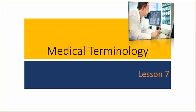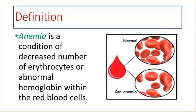Medical Terminology, Lesson 7. Definition: Anemia is a condition of decreased number of erythrocytes or abnormal hemoglobin within the red blood cells.